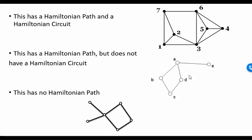In this second figure, I do have a Hamiltonian path, but I do not have a Hamiltonian circuit. The problem is with point A — I can only touch point A once. The Hamiltonian path is going to start with E and go E, A, B, C, D. Now that's certainly not the only path; we could start with B and go B, C, D, A, E. But there is no Hamiltonian circuit.